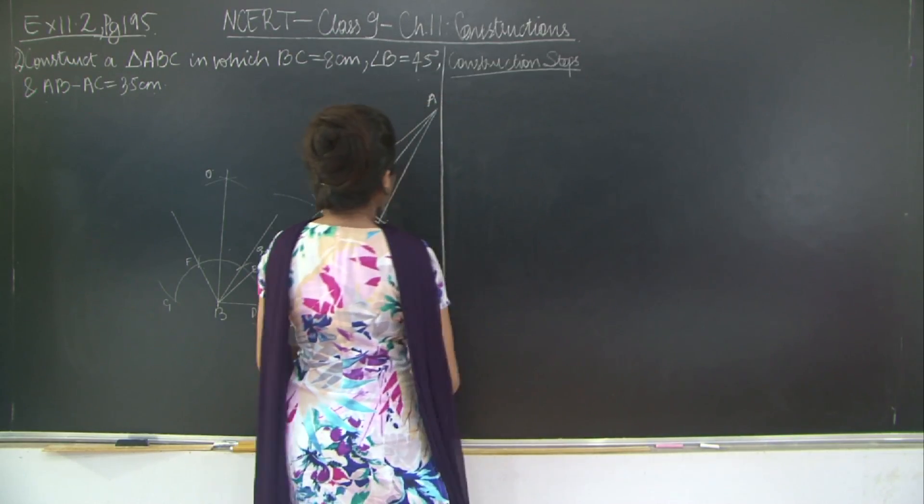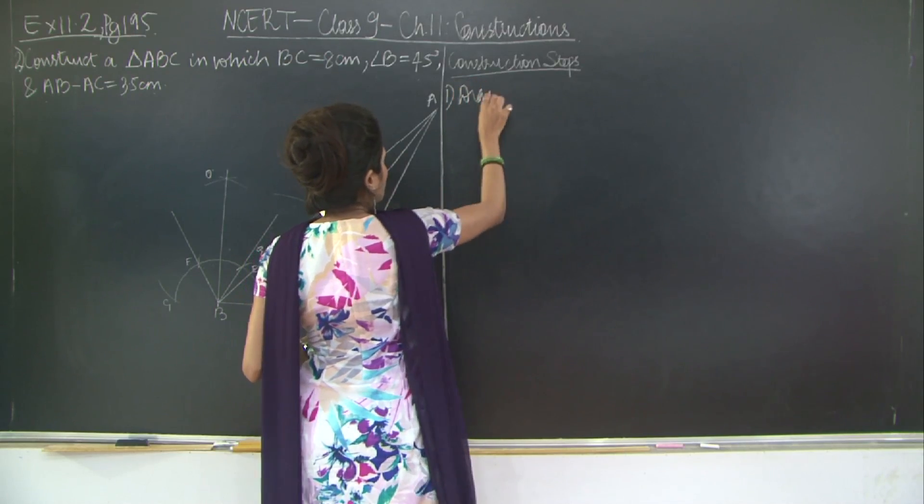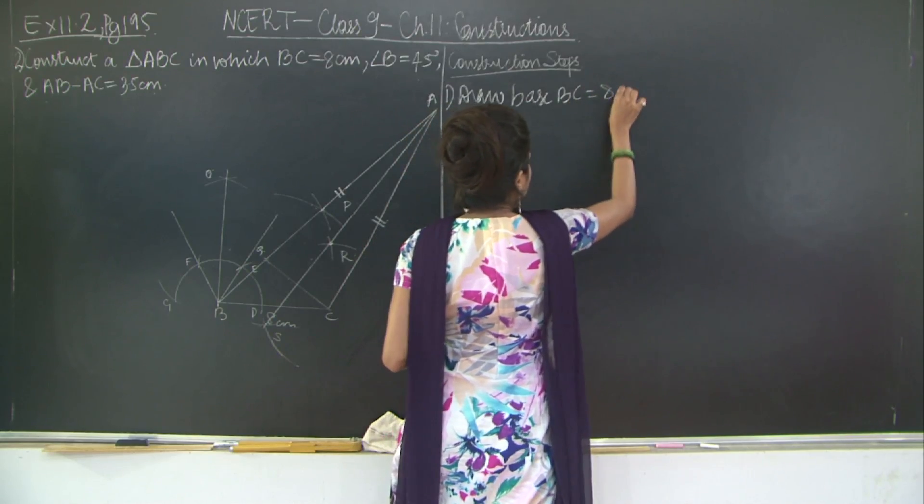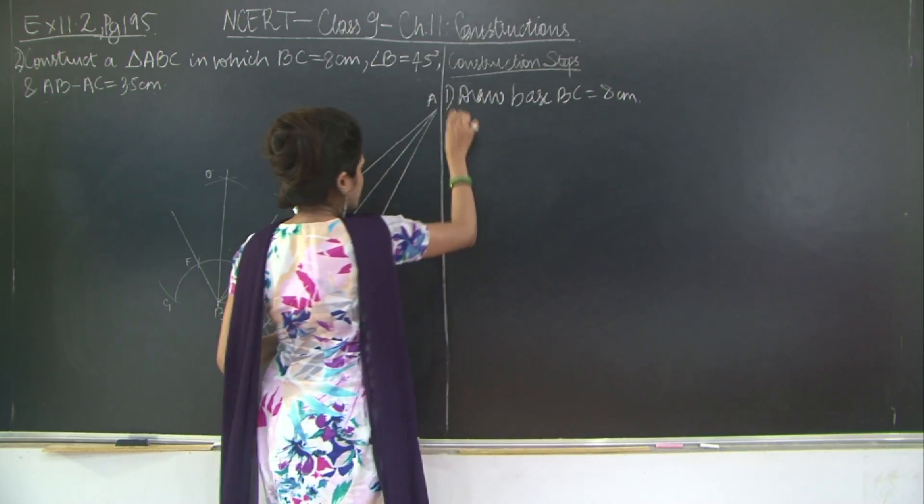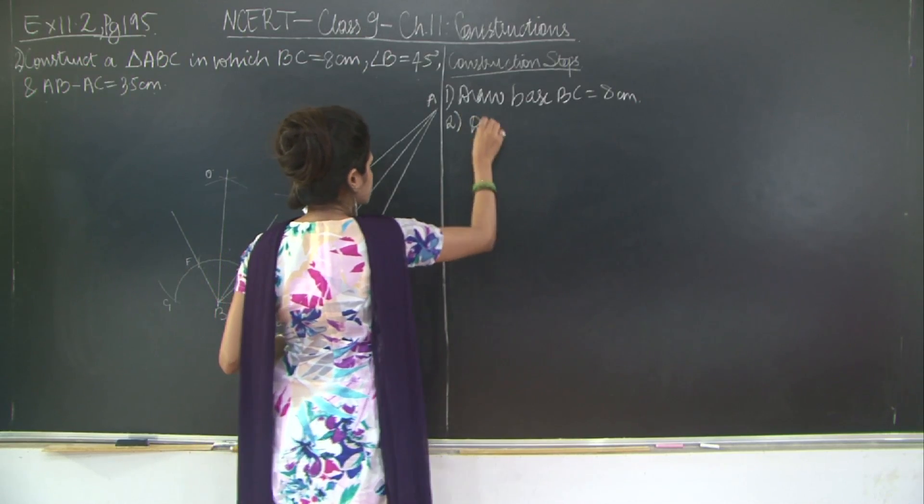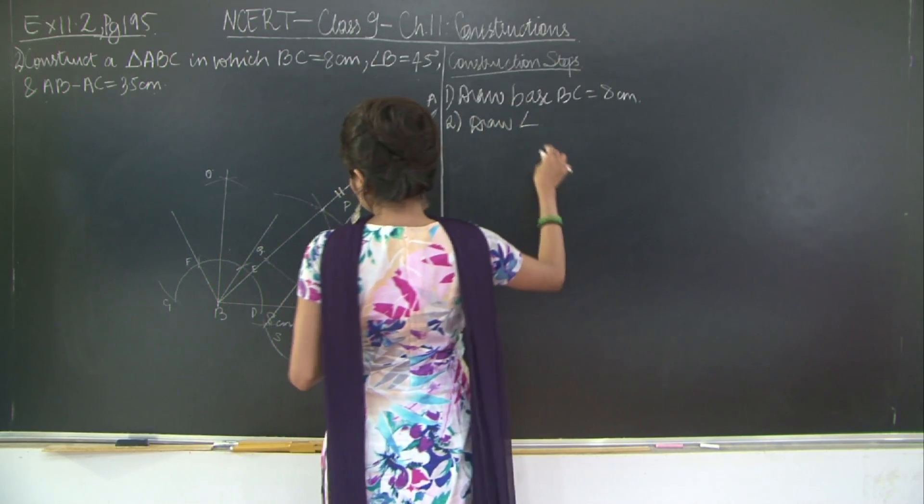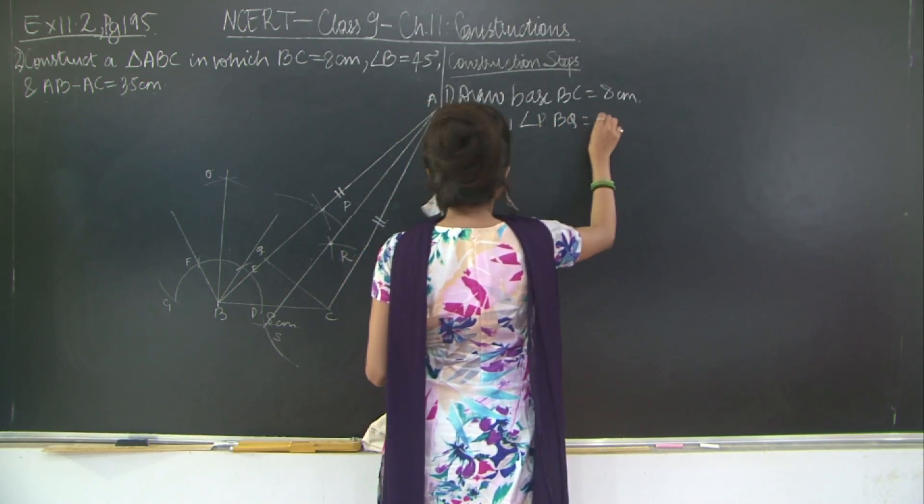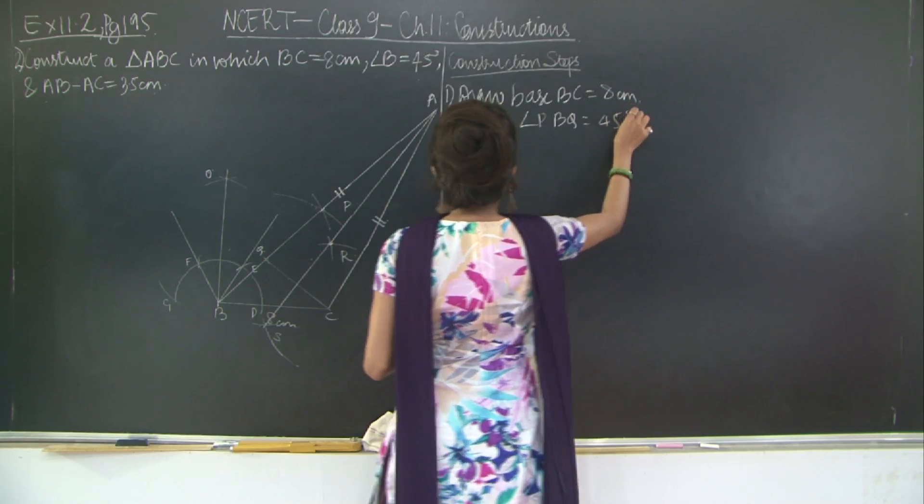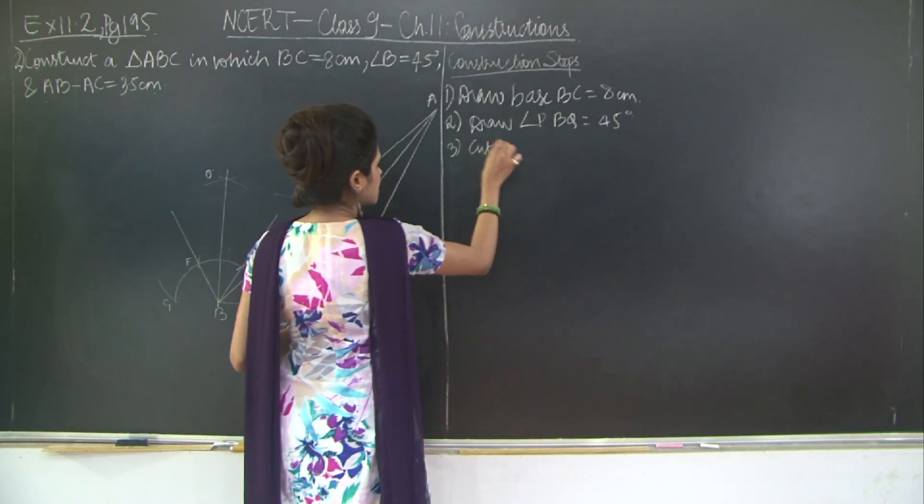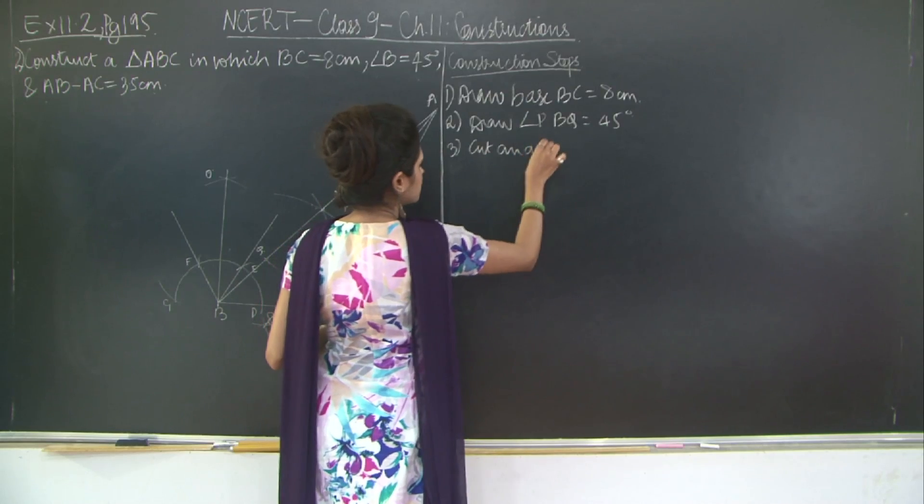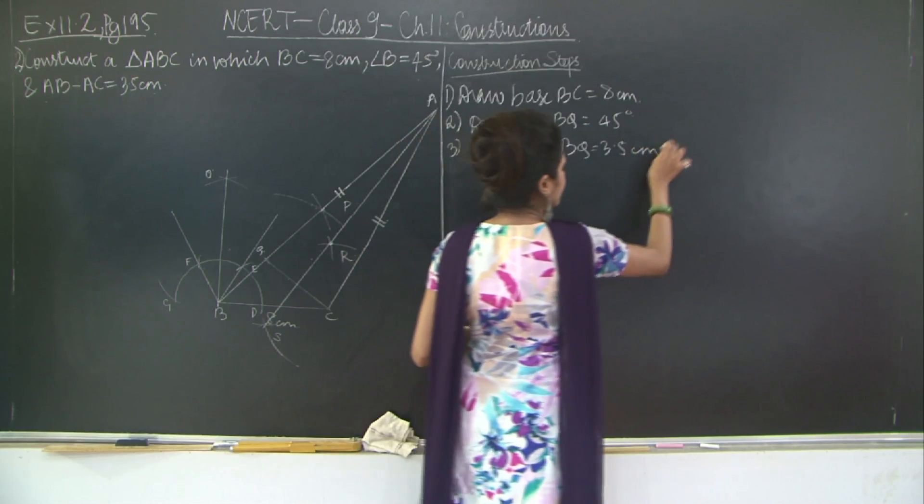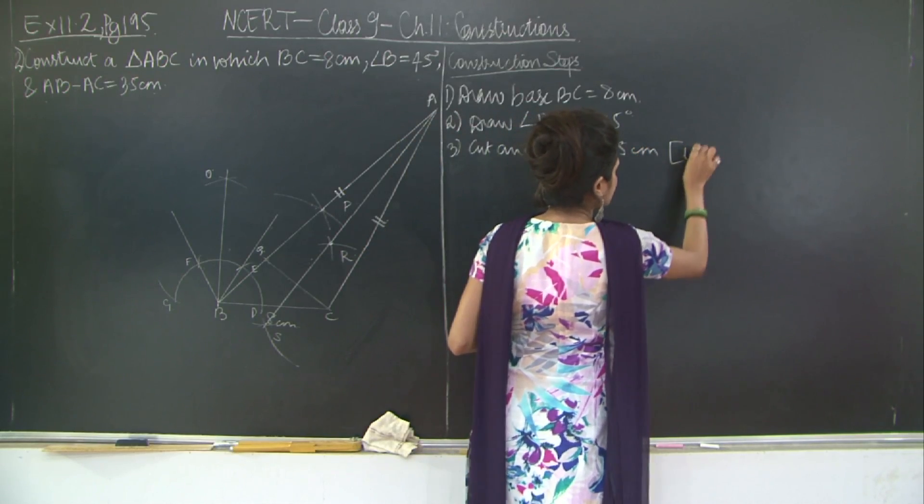Construction steps. Draw base BC is equal to 8 cm. Then draw angle PBQ is equal to 45 degrees. Cut an arc BQ is equal to 3.5 cm. This length is also length of AB minus AC.